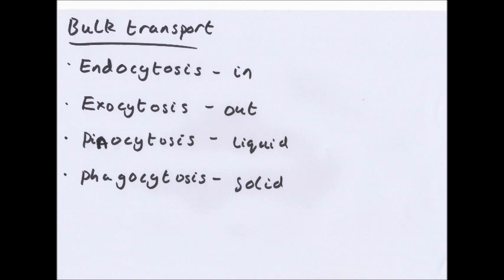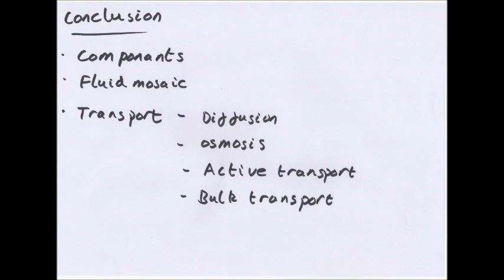Bulk transport has four types: endocytosis, which is something coming into the cell; exocytosis, going out of the cell; pinocytosis when a liquid is involved; and phagocytosis when a solid is involved. With endo and exocytosis, something will fuse to a membrane. For endocytosis, a molecule fuses to the outside of the cell, a vesicle forms from the cell membrane, it buds off, and that vesicle transports something into the cell. For exocytosis, something in a vesicle fuses with the cell membrane and releases the thing.